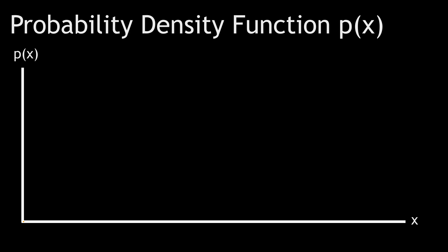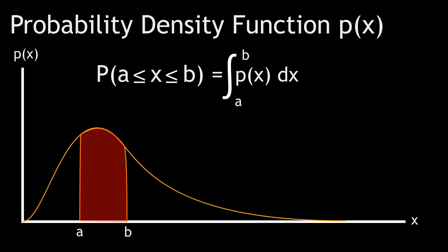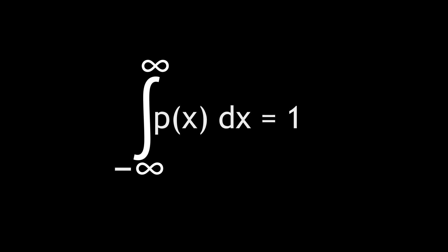But in a continuous probability distribution, we have some function called a probability density function. This is a function such that if we integrate it between two values, say, a and b, we get the probability that our variable X takes some value between a and b. So the probability is just given by the area under the curve. Because our variable X has to take some value somewhere, if we integrate over the entire space, from minus infinity to infinity, this should be equal to 1.